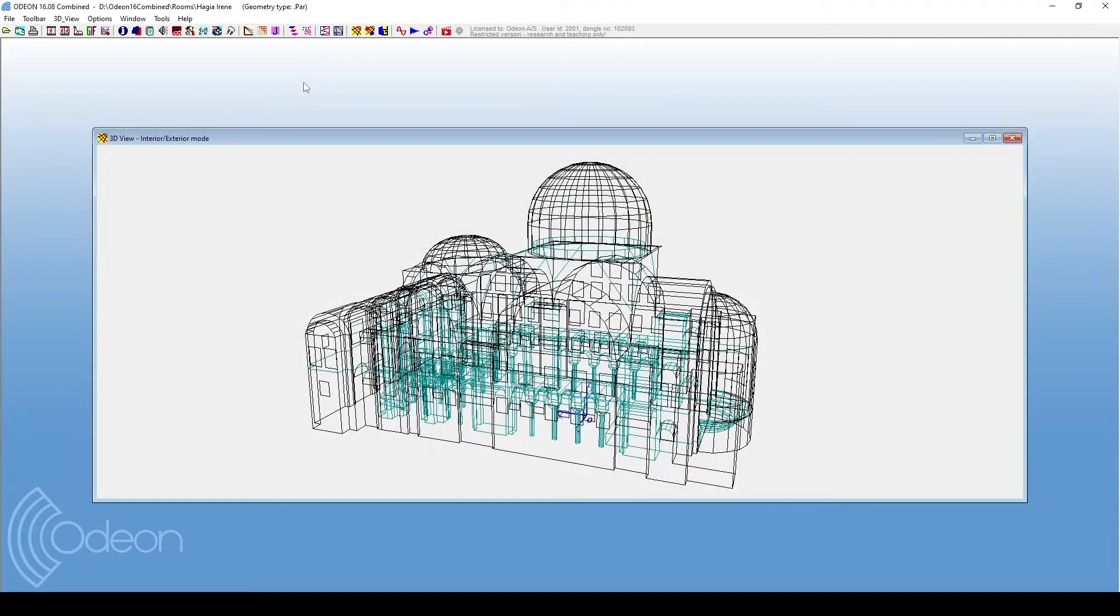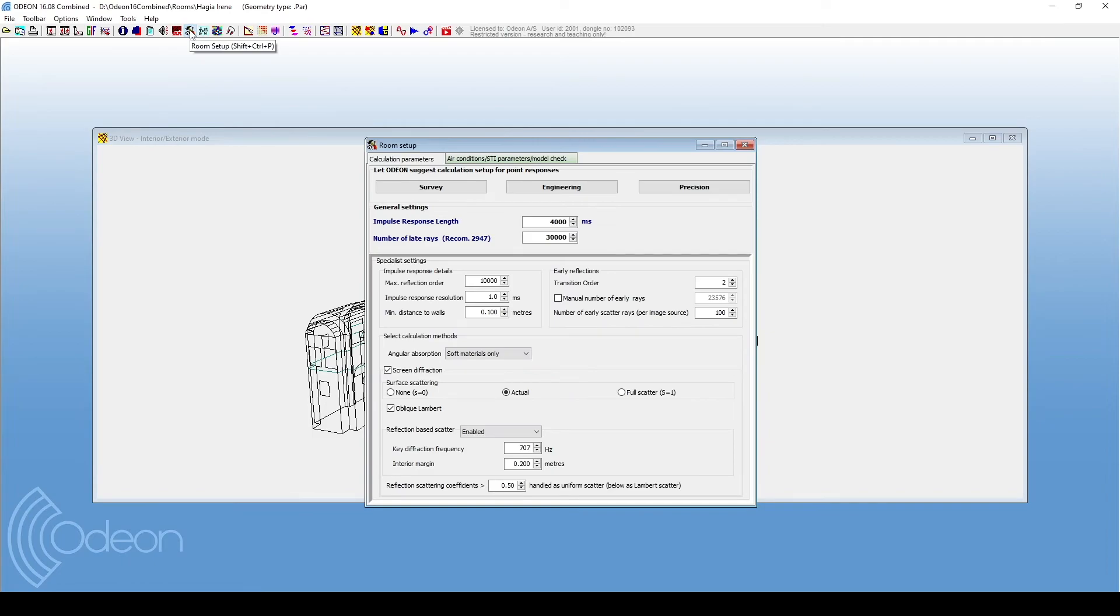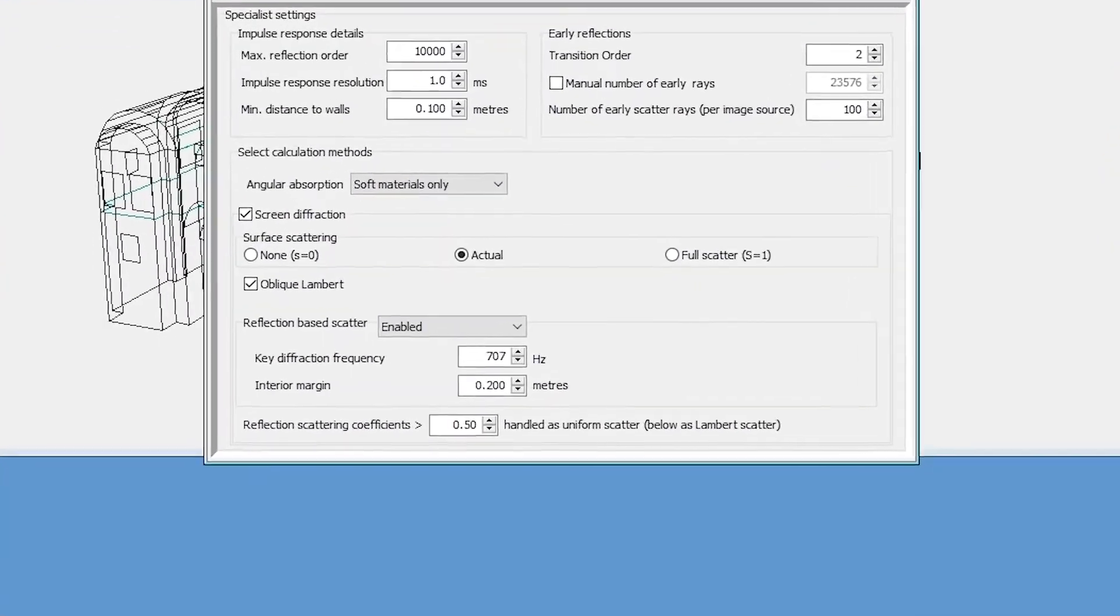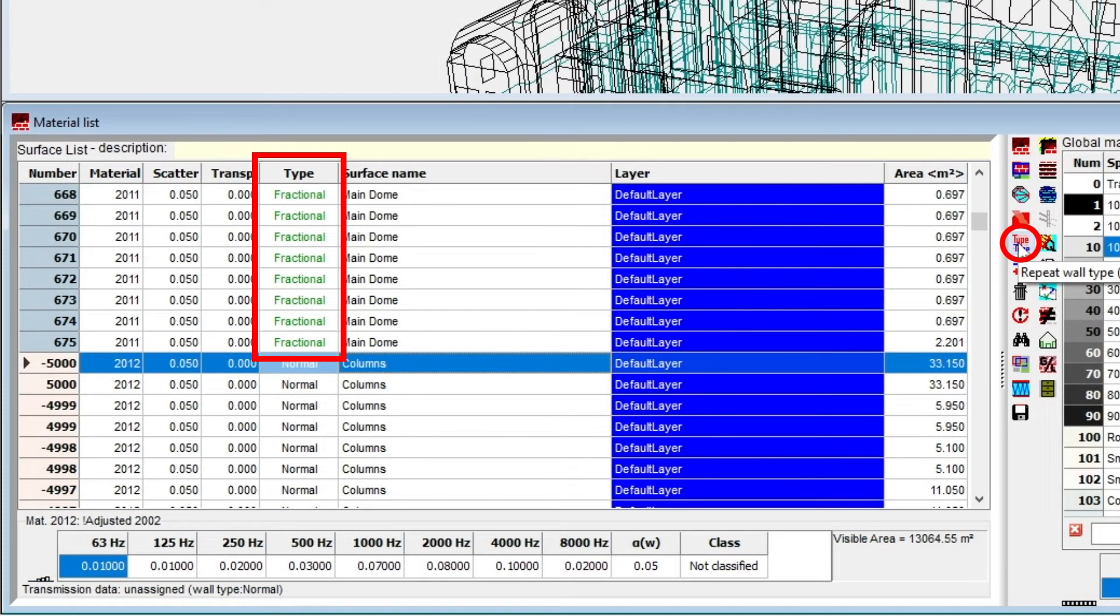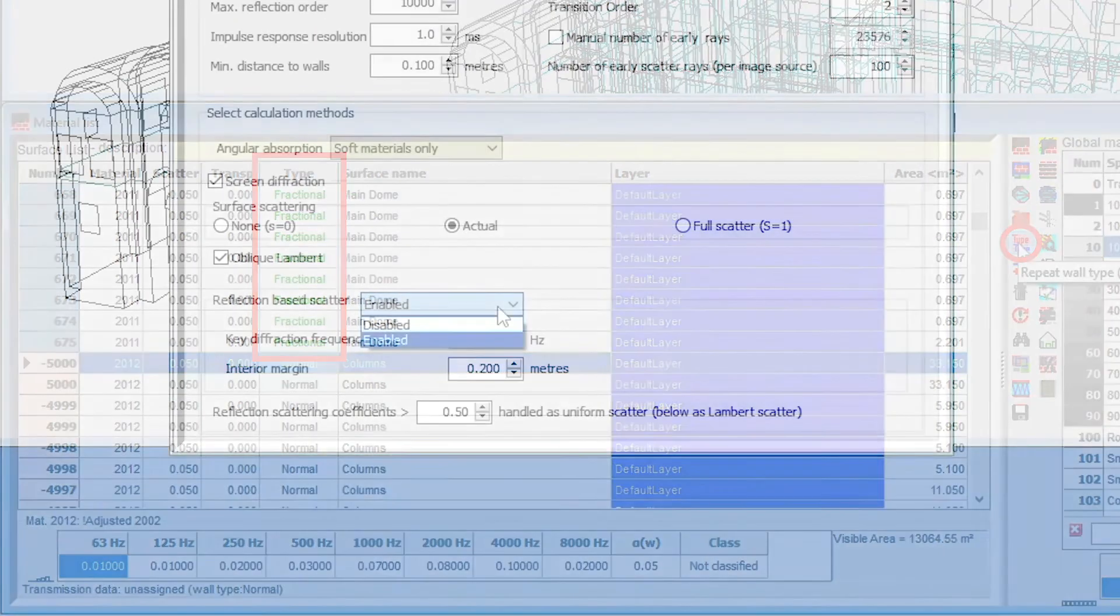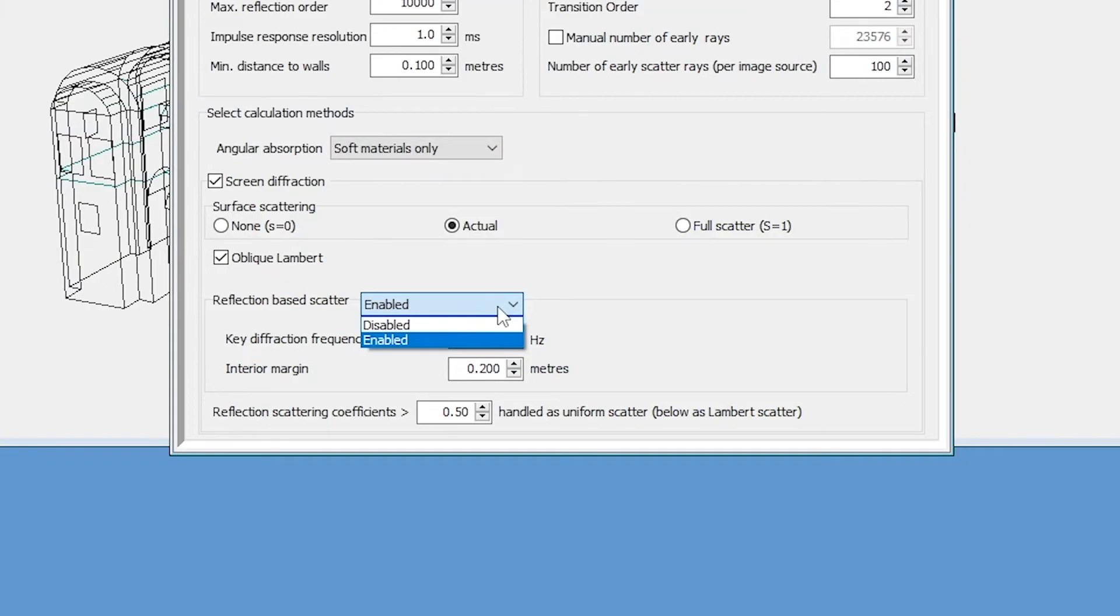Reflection-based scattering can be disabled altogether by going to the room setup. However, disabling it completely will only lead to less accurate results. So for practical applications, we recommend to keep it enabled and use the fractional setting for curved surfaces. Reflection-based scattering should only be disabled for experimentation and research purposes.